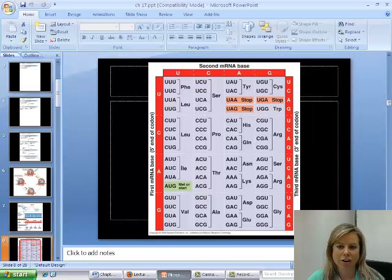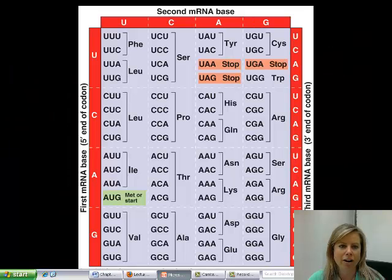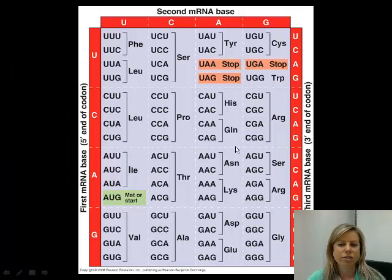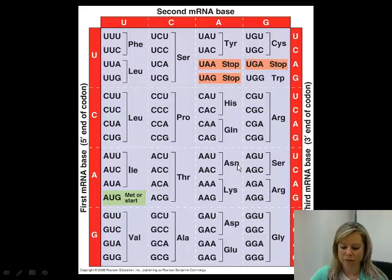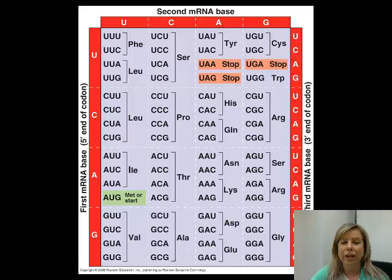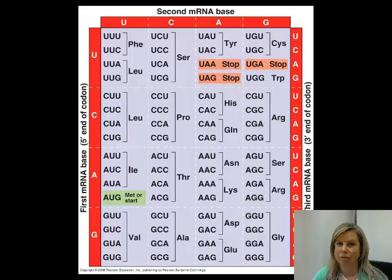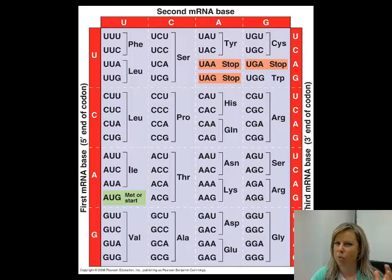There's a huge chart of all of the amino acids and the possible codes on the RNA that can code for them. What's really interesting is that this code is pretty much universal — whether you're talking about bacteria, protists, amoebas, plants, animals, or us, we all have the same code. This is pretty strong evidence for evolution. It's kind of weird and coincidental that we would all have the exact same genetic code.